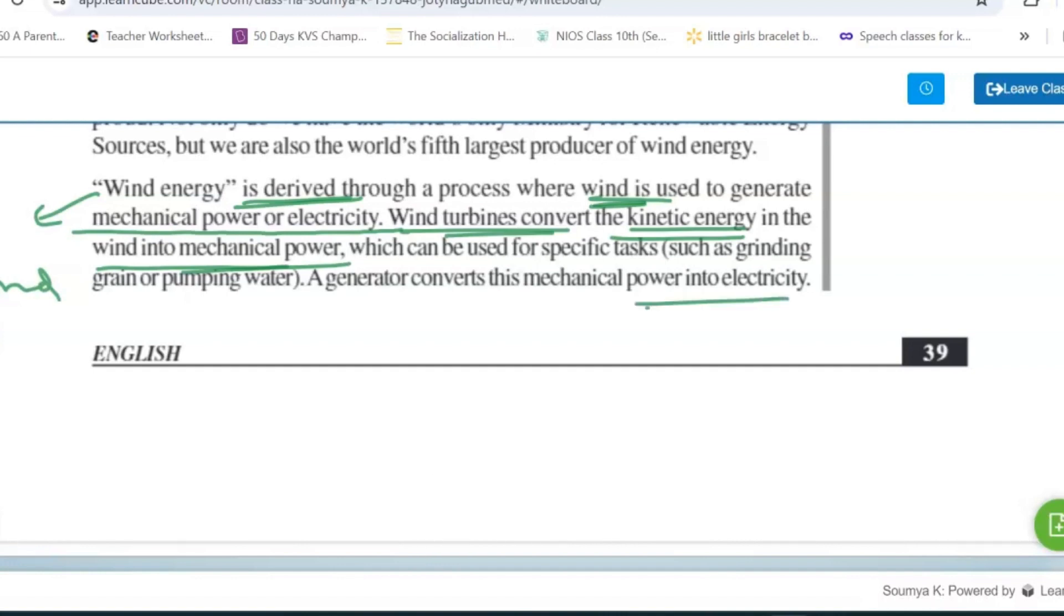Which can be used to convert to electricity through a generator. Kinetic energy gets converted to mechanical energy or power, and through a generator this gets converted to electricity. This is the process involved.